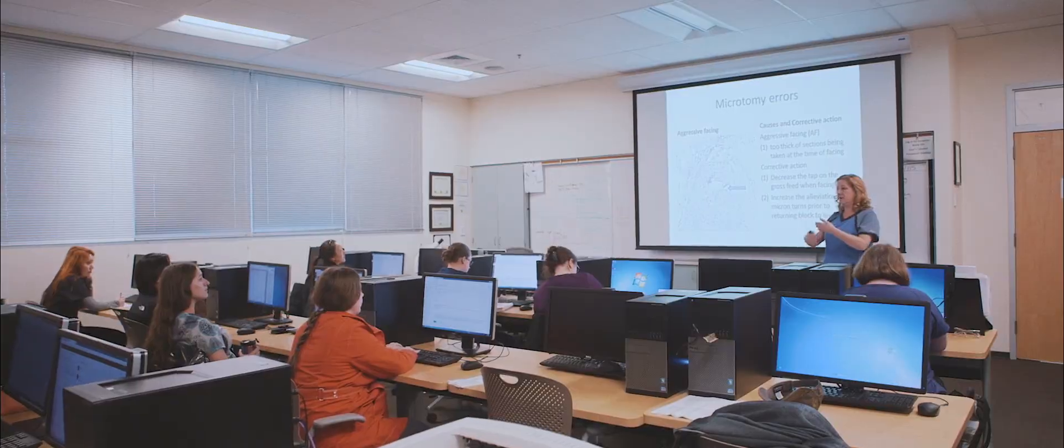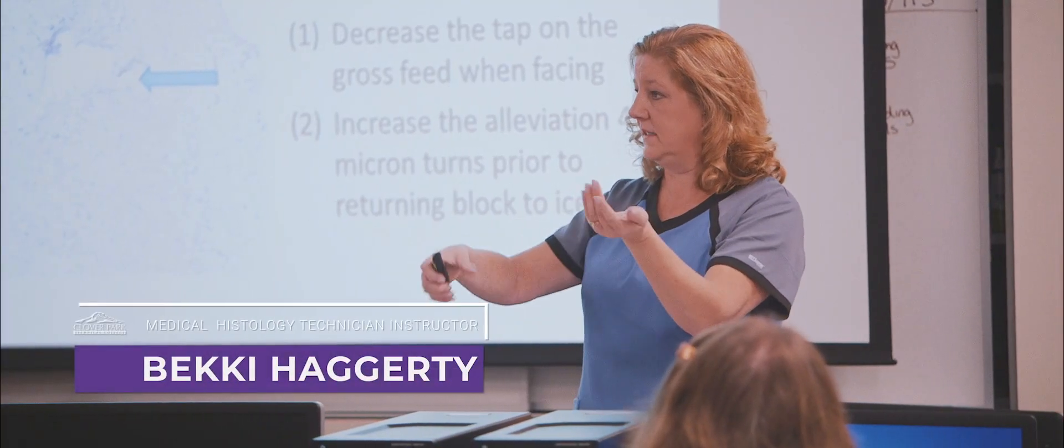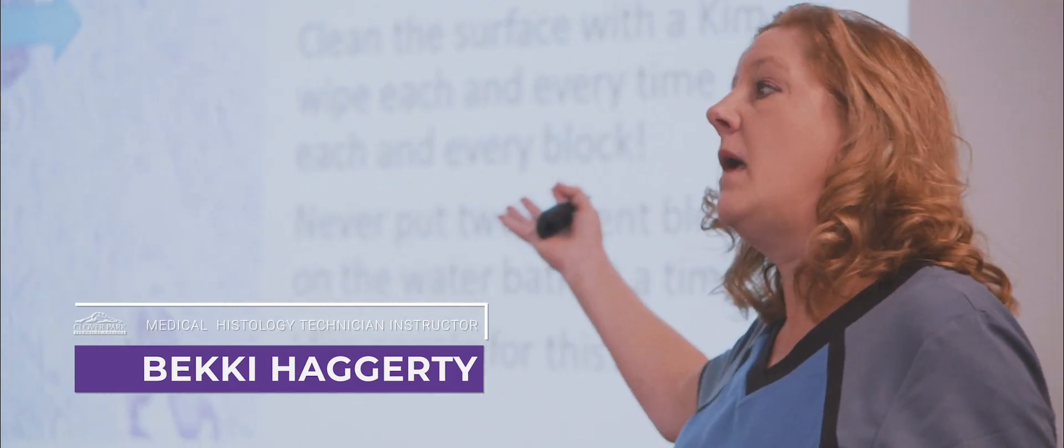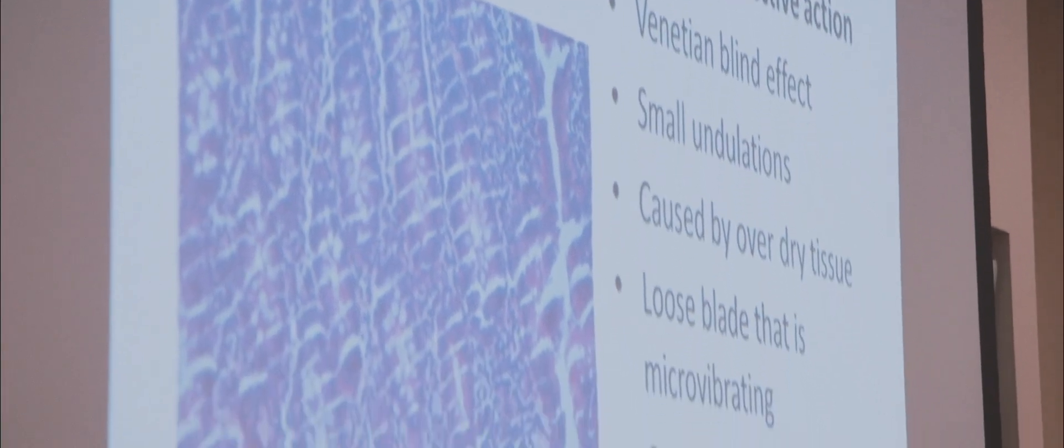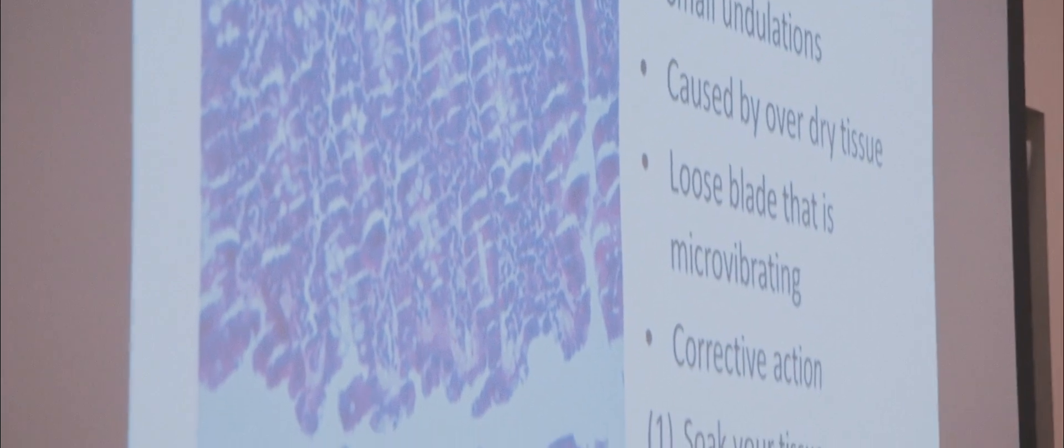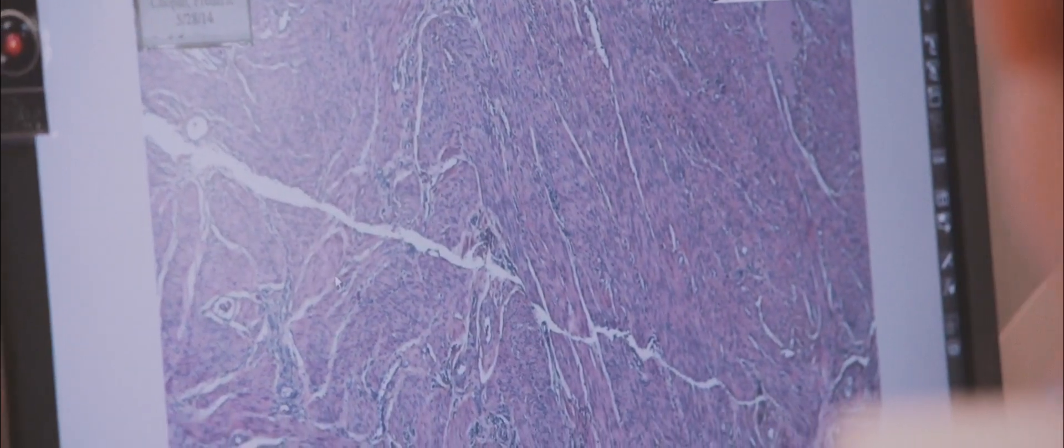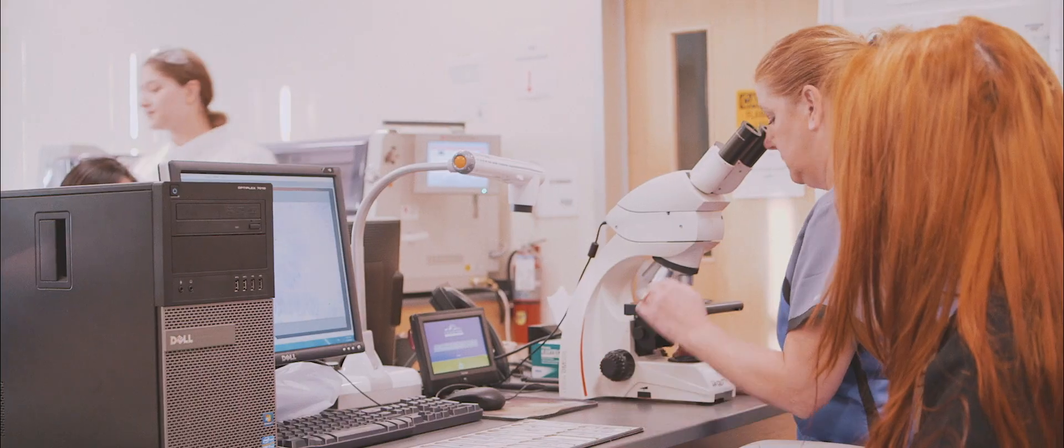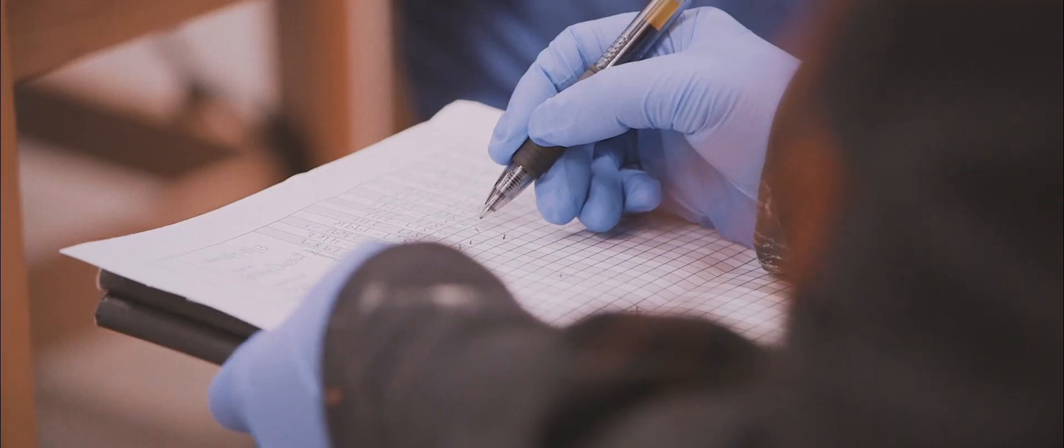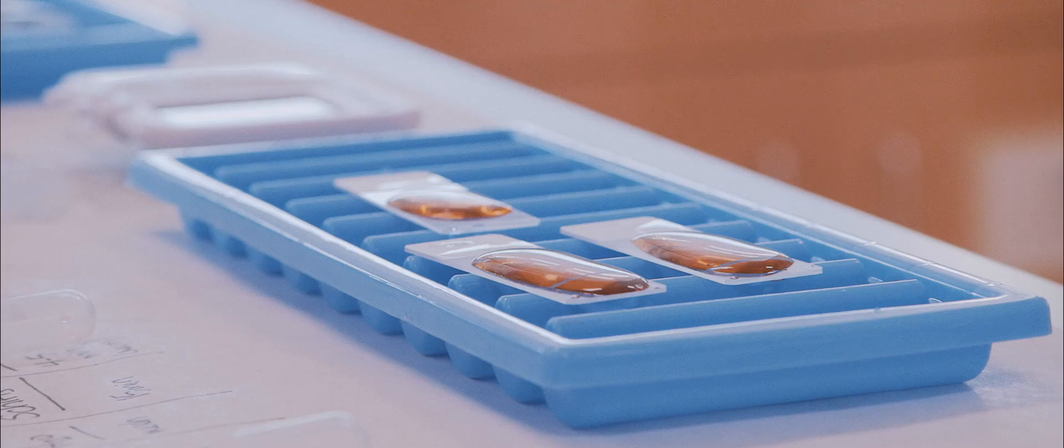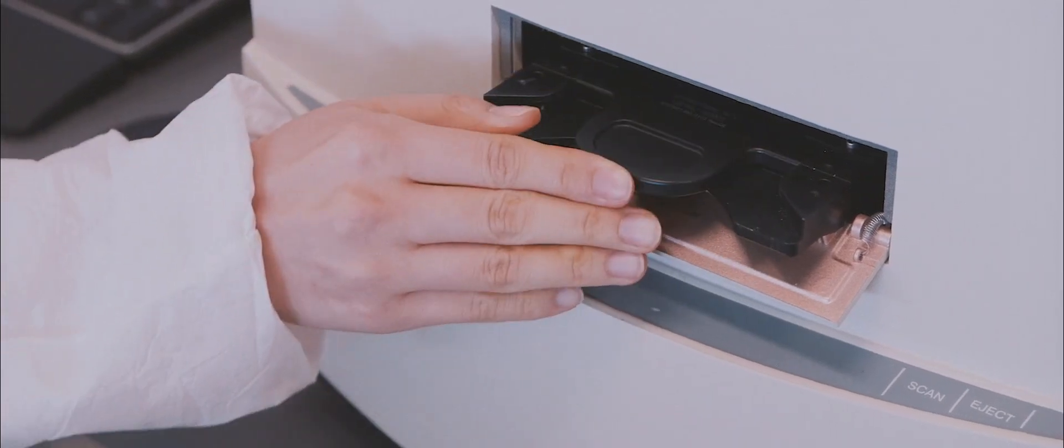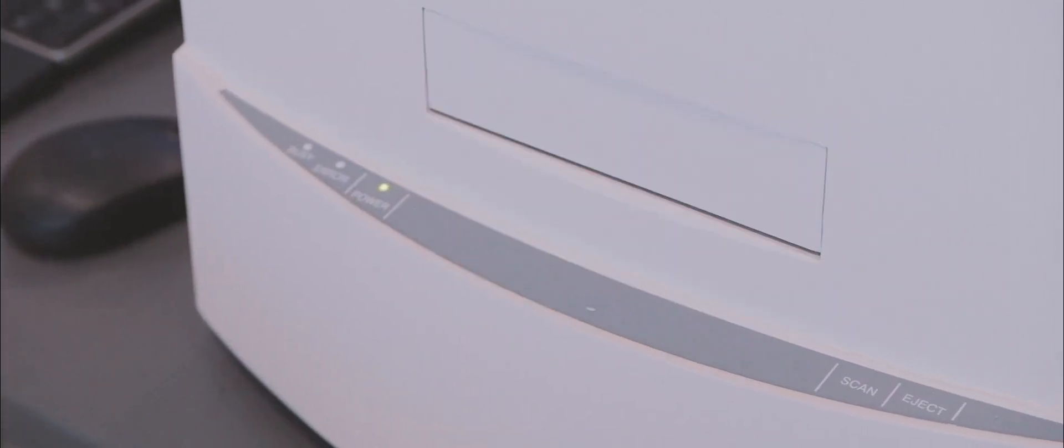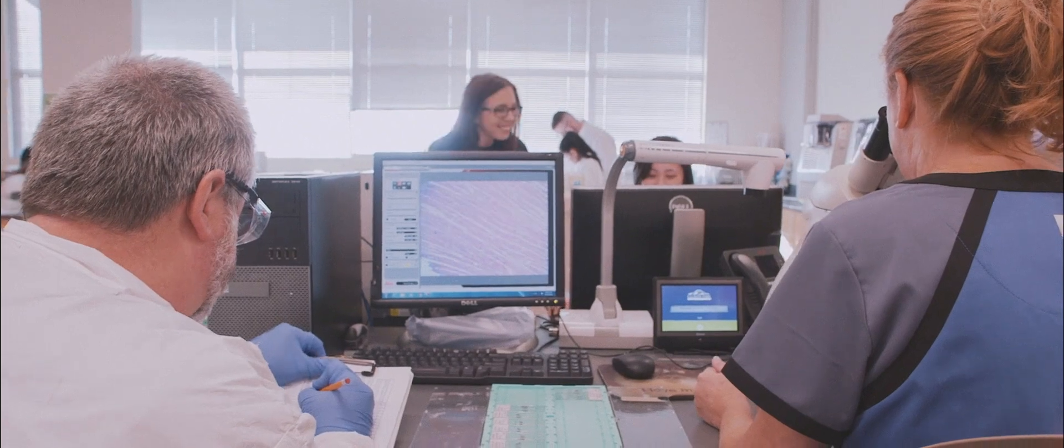Most people think that histology is the study of history when it truly is the study of diseased tissue. We look at it, we dissect it, we find abnormalities in it or the lack thereof, and we process that tissue so that we can make a microscopic slide and give that to the pathologist so he can look at it and say whether that person has cancer or not.